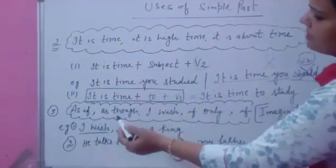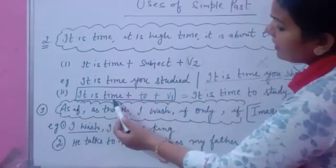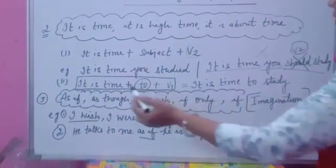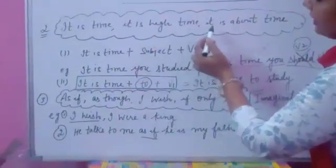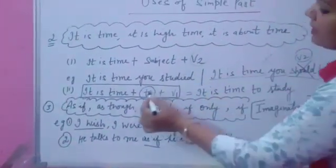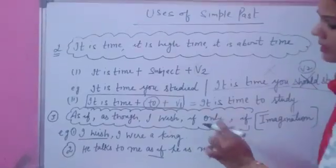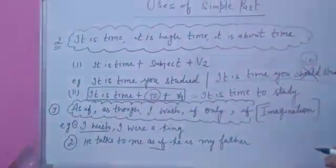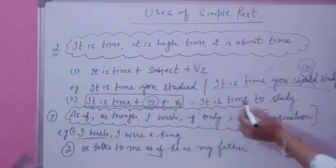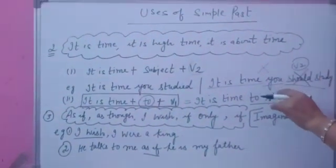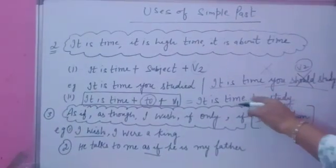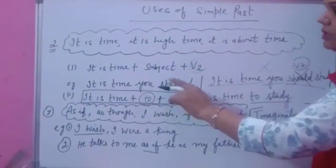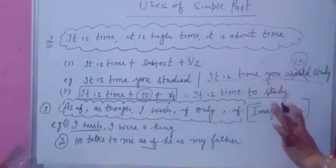And the second use is whenever you find it is time, and after that preposition to is there. It is time, it is high time, and it is about time, and after that preposition to is here. You always use first form of the verb. For example, it is time to study. Now you are giving advice. You are saying something in present but this statement is related to your past. That's why you use here only simple past tense.